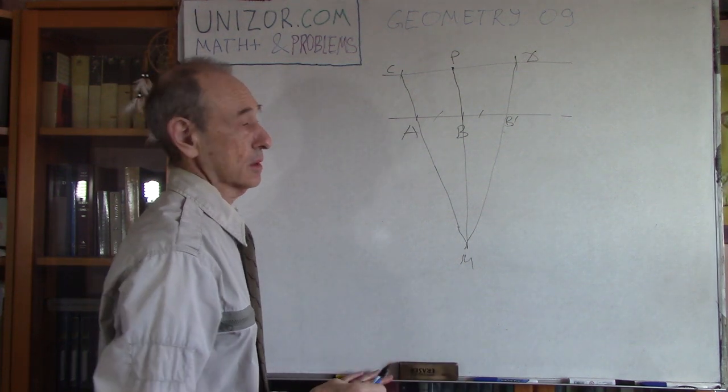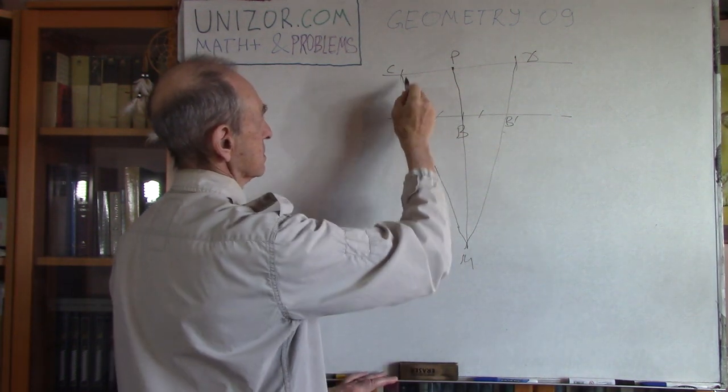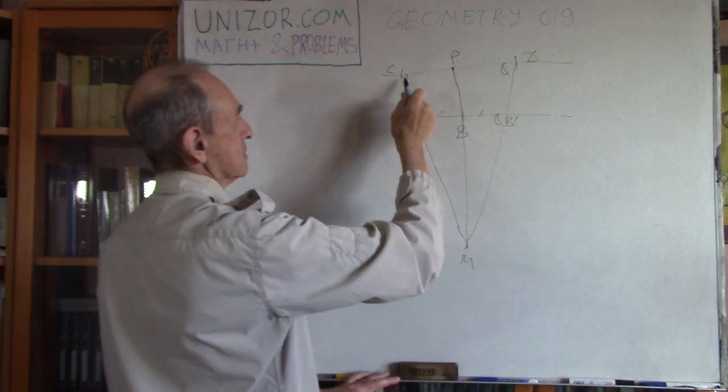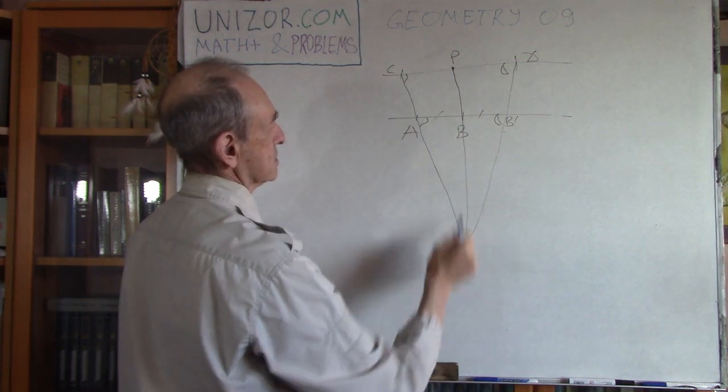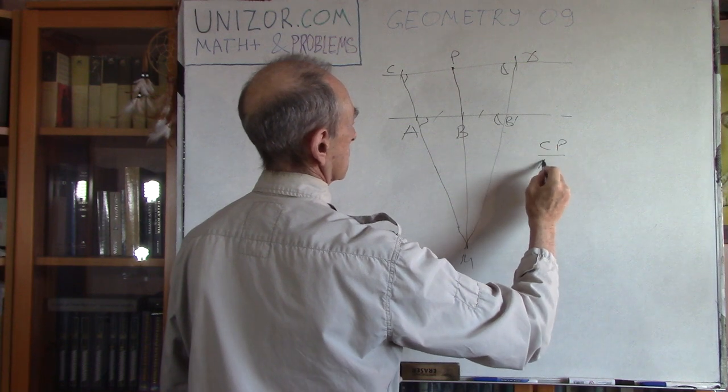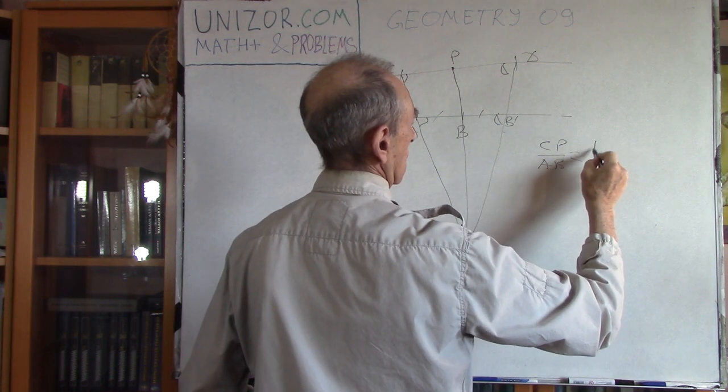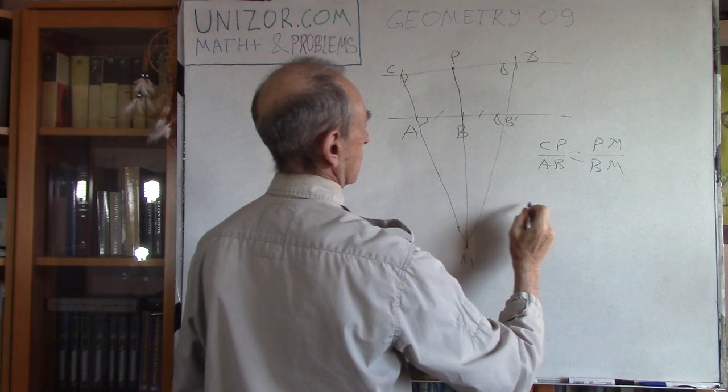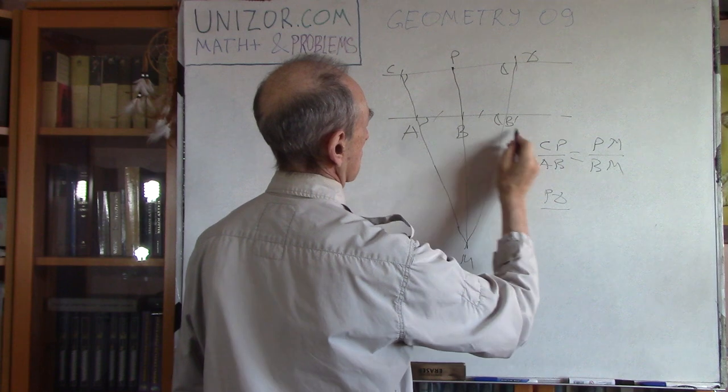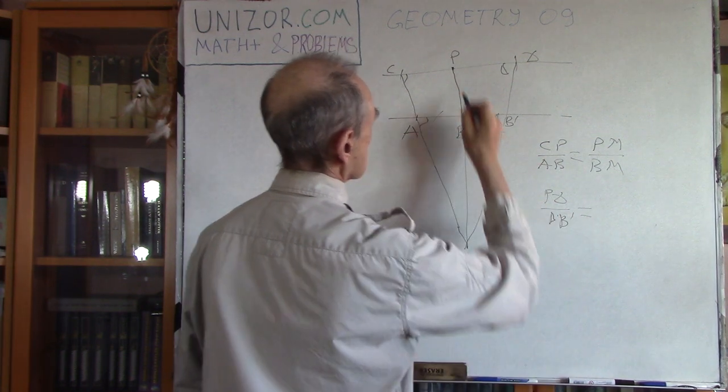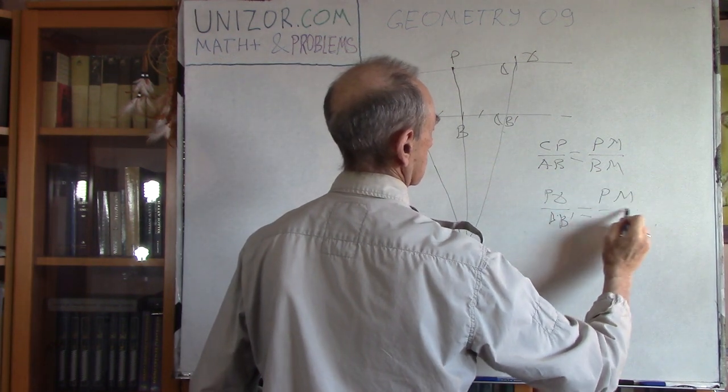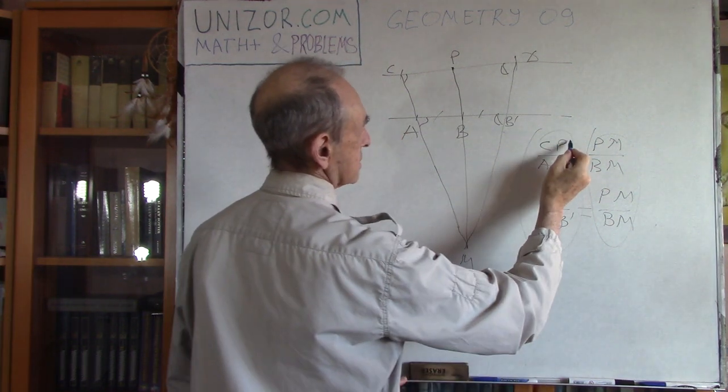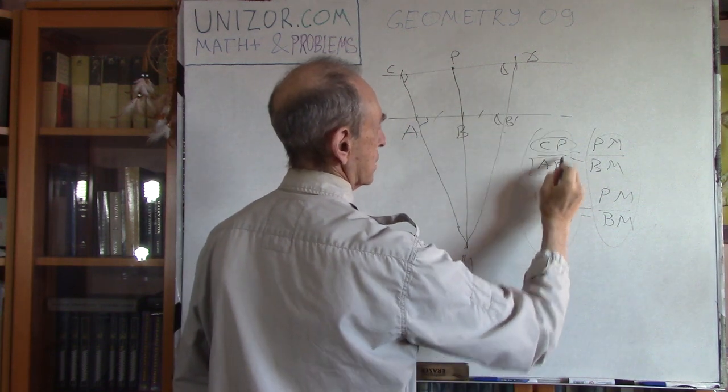For exactly the same reason. Because, obviously, again, since lines are parallel, angles are equal. So triangles are similar, which means this goes to this as this to this. So CP to AB as PM to BM. And these triangles are also similar. So PD to BB prime as the same thing, PM to BM. So these are equal, so these are equal. And since CP is equal to PD, AB should be equal to BB prime.